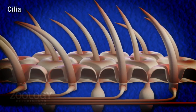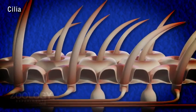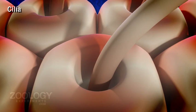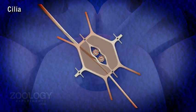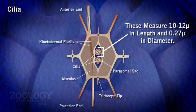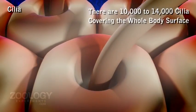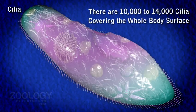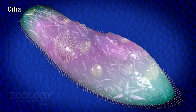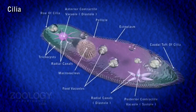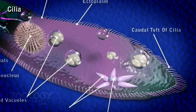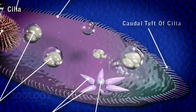Cilia: The entire body surface is covered by numerous tiny hair-like fine projections called cilia. These measure 10 to 12 microns in length and 0.27 microns in diameter. There are 10,000 to 14,000 cilia covering the whole body surface. These motile organelles are arranged in regular longitudinal rows. The length is uniform throughout, except for a few longer cilia at the extreme posterior end forming a caudal tuft — hence the species name caudatum.